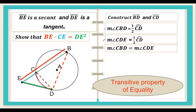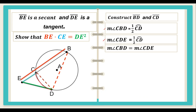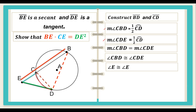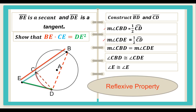When angles have the same measure, they are also called congruent angles, so we can state that angle CBD is congruent to angle CDE. We now have established one pair of congruent angles. We can also state that angle E is congruent to angle E by the reflexive property — an angle is congruent to itself.